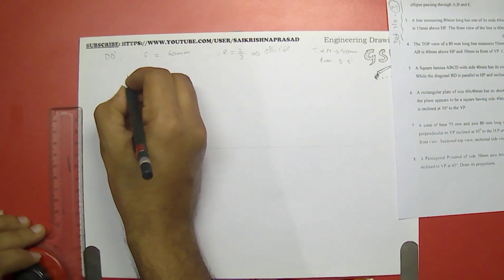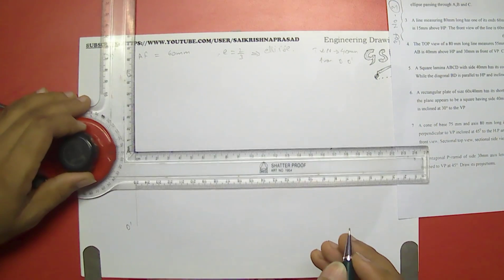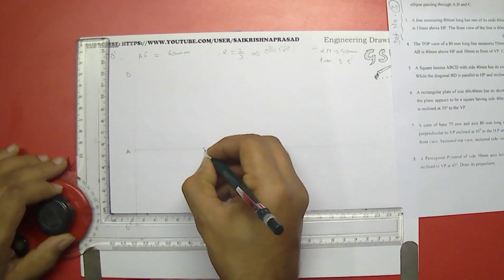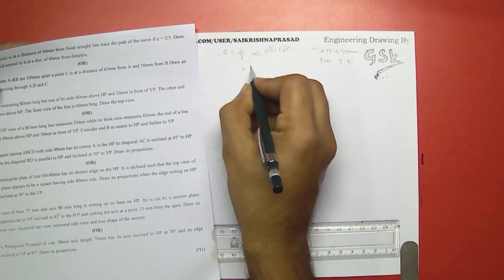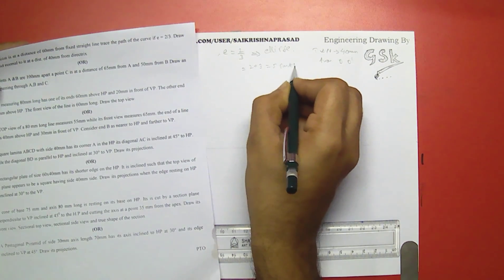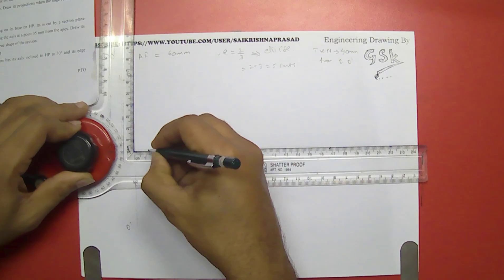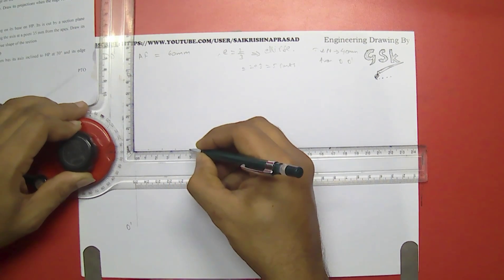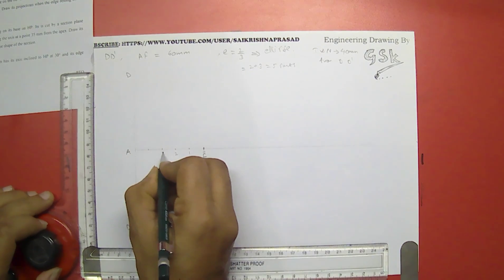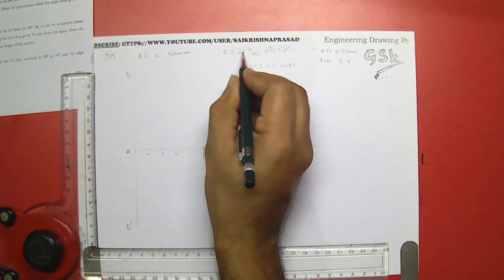This is the directrix, the fixed straight line D-D dash. From here I will be taking 60 mm — this is the focus point F. Eccentricity 2 by 3 means we add 2 plus 3 equals 5 parts, so we divide this 60 mm into 5 parts. Each part is 12 mm: 1, 2, 3, 4, and 5.